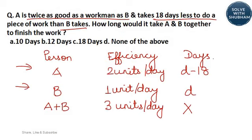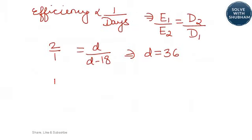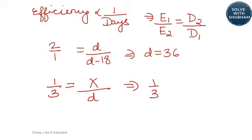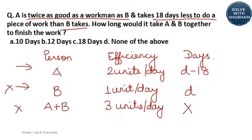Taking the second and third values: 1/3 = x/36, so x comes out as 12. Therefore, A and B together will take 12 days to complete the work. This is a time and work question solved through the concept of ratio.